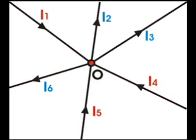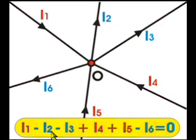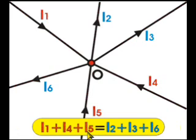Now, we add all these currents, taking incoming currents as positive and outgoing currents as negative. According to Kirchhoff's Current Law, the result of this addition will be zero. That means I1 minus I2 minus I3 plus I4 plus I5 minus I6 is equal to zero. Or, I1 plus I4 plus I5 is equal to I2 plus I3 plus I6.